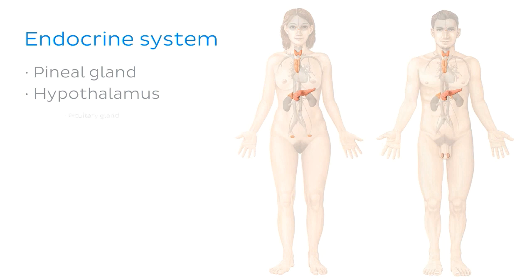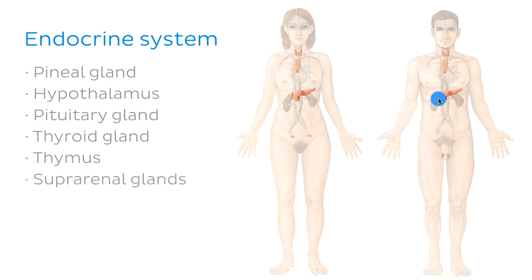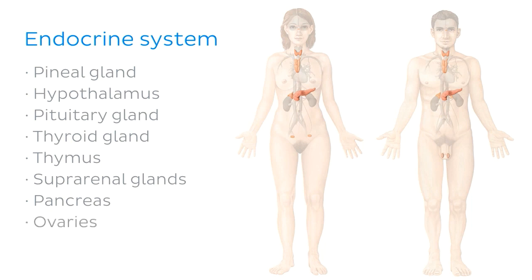Just below the pineal gland, we can see the pituitary gland here. Then in the neck region, we have the thyroid gland here. Next we'll talk about this gland here, which is called the thymus, followed by the suprarenal glands, which we can see just above the kidneys. We'll then talk about the pancreas, which we can see here. And finally, we'll move on to the aspect of the endocrine system that varies between females and males — the ovaries and the testes. We can see these structures in the pelvic region here and here.